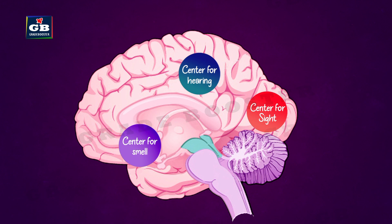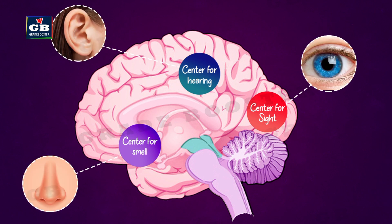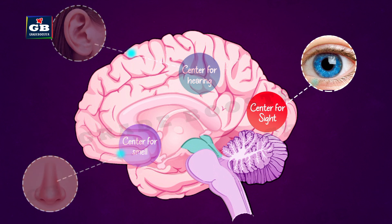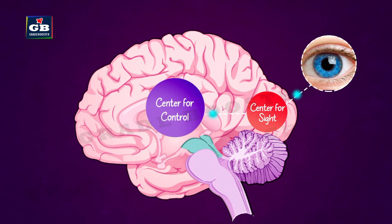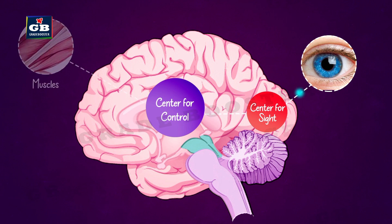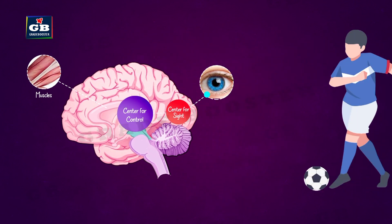The thought process takes place in the forebrain. The forebrain has regions which receive sensory impulses from various receptors, and it has different centers for hearing, smell, sight, and more. The information from different sense organs is analyzed and compared with information already stored in our brain, and based on this analysis the forebrain takes a decision.